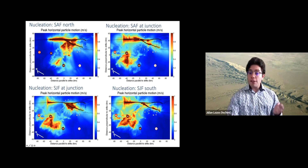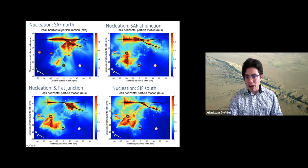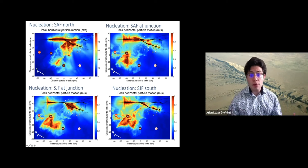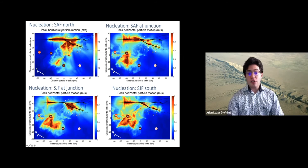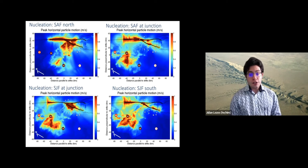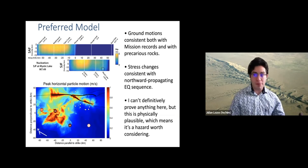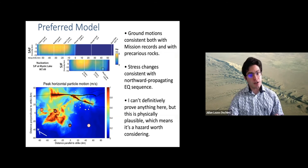Starting the rupture at the junction on either the San Andreas or San Jacinto produces two very similar bilateral ruptures that both match the missions better — strong shaking at San Fernando, San Gabriel, and San Juan Capistrano — but they still have this strong southward directed motion towards the precariously balanced rocks. But if I start the rupture on the southern end of the San Jacinto, it hits everything it needs to hit. It's a northward directed rupture, most of the rocks are in the blue rather than in the yellow or orange, and the rupture is going away from them. Meanwhile, San Gabriel, San Juan Capistrano, and San Fernando are all in zones of strong shaking, and San Luis Rey is not.